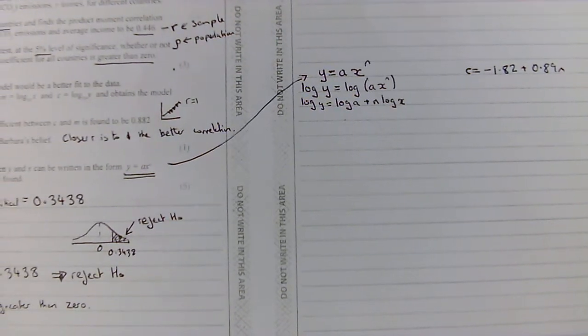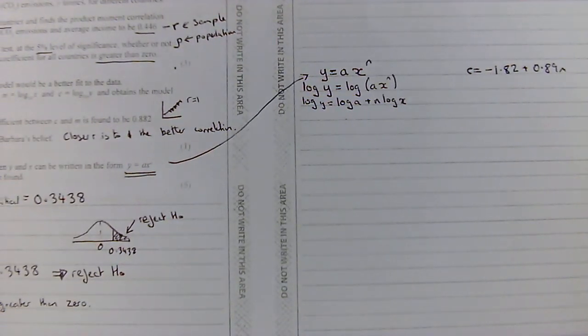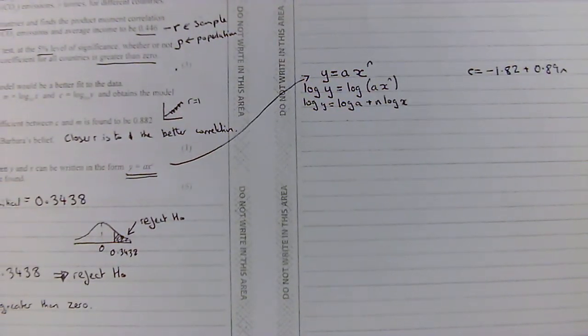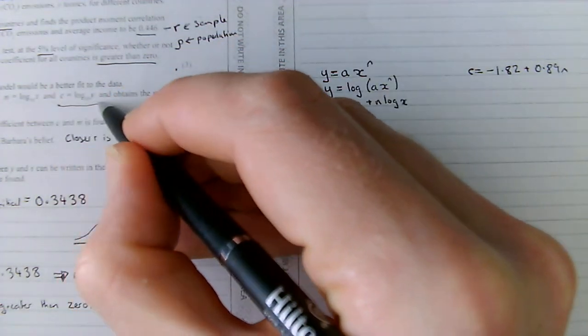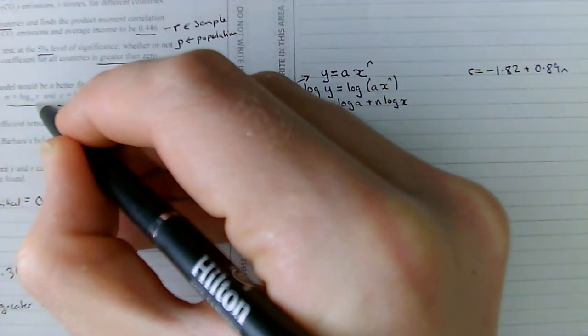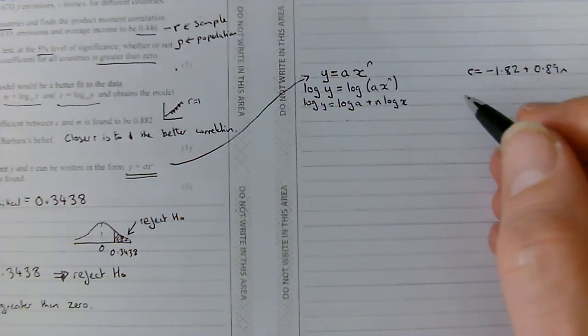But it tells us in the question that C is log base 10 of y. And m is log base 10 of x. So, I'm going to just rewrite that in.